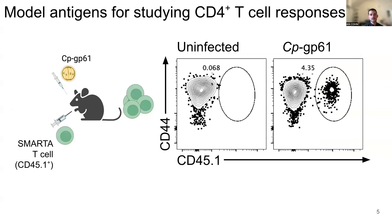When mice receive CD45.1 positive SMARTA T-cells in the absence of infection, we are unable to find CD45.1 positive cells in the intestines of mice. However, when mice are infected with GP61 expressing cryptosporidium, we can see robust expansion of these T-cells in the intestines of infected mice. This suggests that this new strain can be used to track antigen-specific T-cells against the parasite.